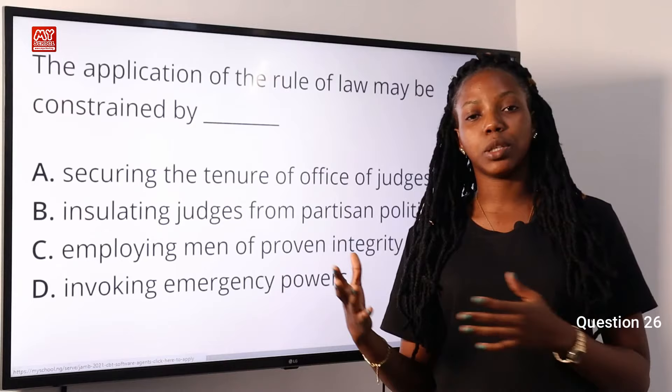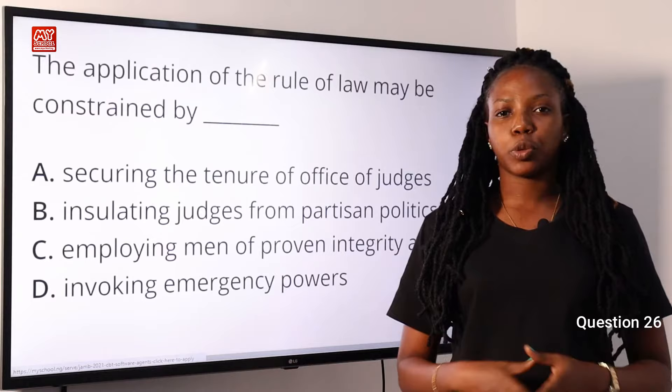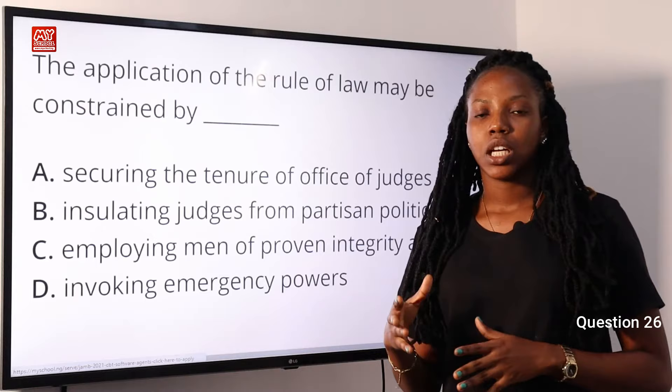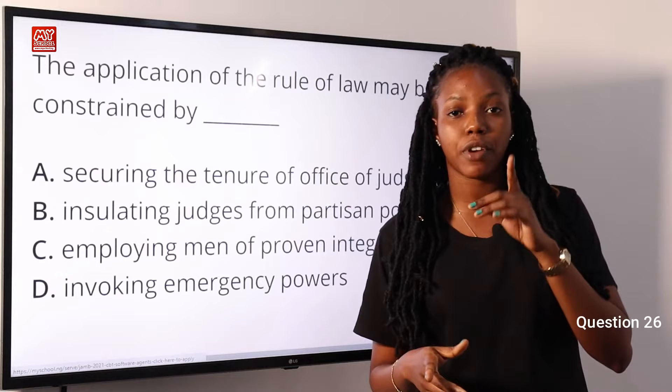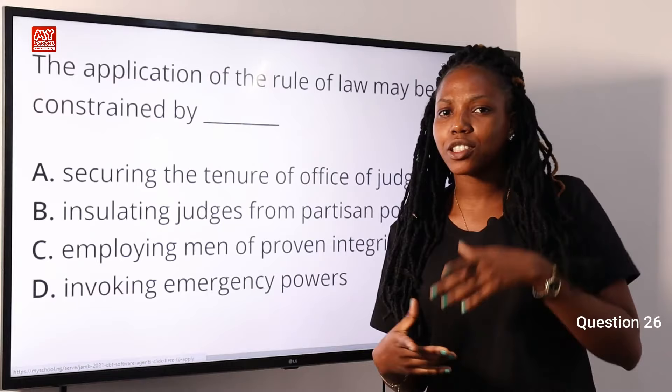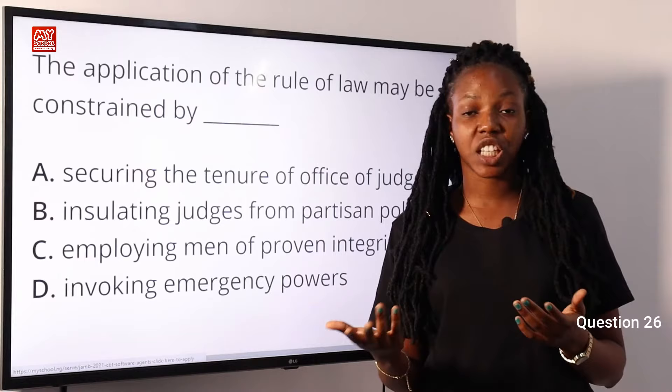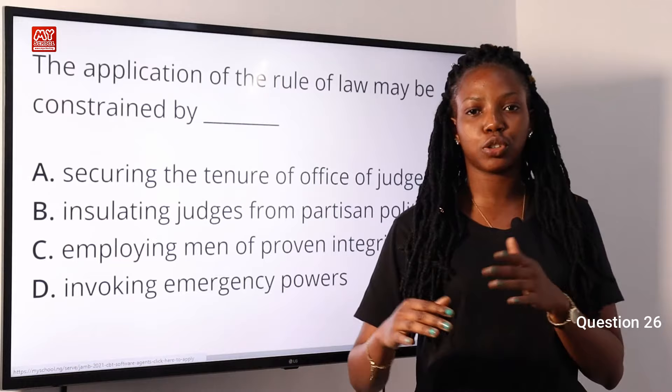The rule of law means the supremacy of law over everyone — both politicians, the government, and the citizens. The answer to this question is D, invoking emergency power. Why? For instance, if there is a war in a country, a state of emergency can be declared. And when it is declared, bad governments can be enthroned and citizens' rights may be ignored. Option D is the correct answer — we are talking about limitations to the rule of law, limitations to the supremacy of law over everyone.